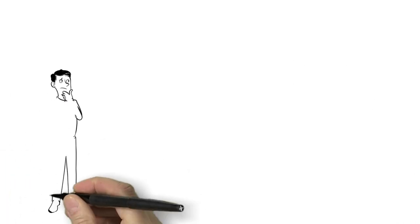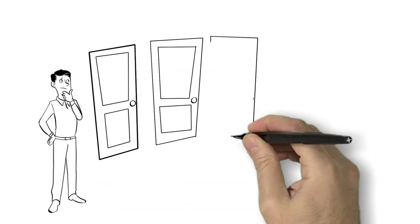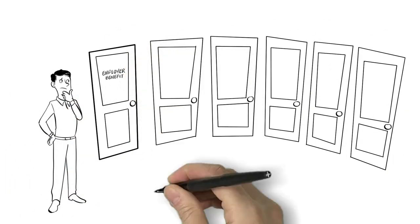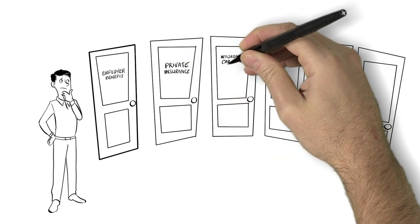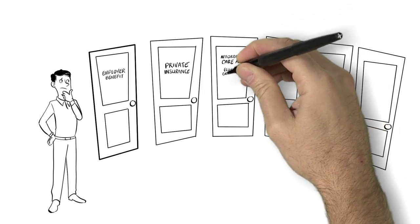There are several options for health care coverage. You may be offered health insurance through your employer, or you may purchase private insurance on your own or through the Affordable Care Act Exchange, known in California as Covered California.